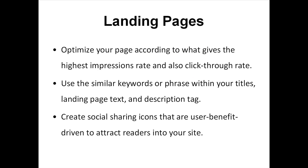Looking at the Landing Pages report, you should be able to identify the aspects you can improve for search engine traffic. Optimize your page according to what gives the highest impressions rate and CTR. Make sure you use similar keywords or phrases within your titles, landing page text, and description tag. Create social sharing icons that are user-benefit-driven to attract readers. Some examples of the most clicked-through keywords analyzed using Google Webmaster Tools are: How To, You, Best, Why, Tricks, and Free. Use these words in your title and description tag to increase your CTR.